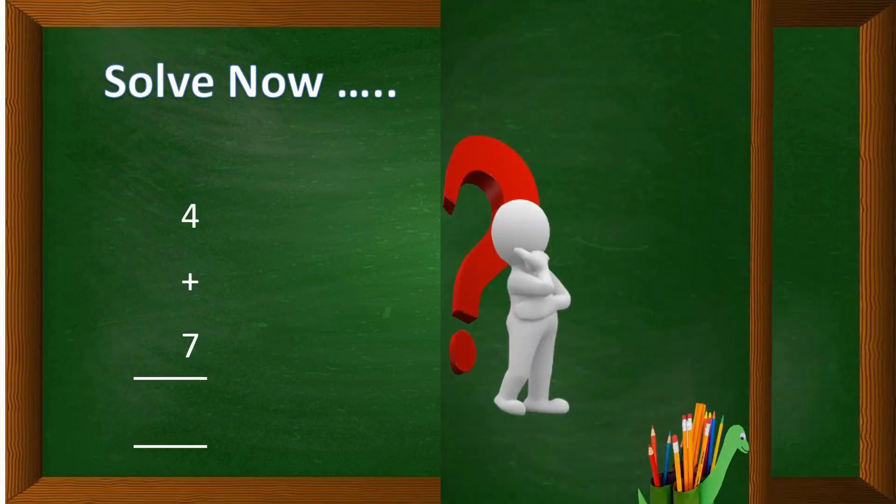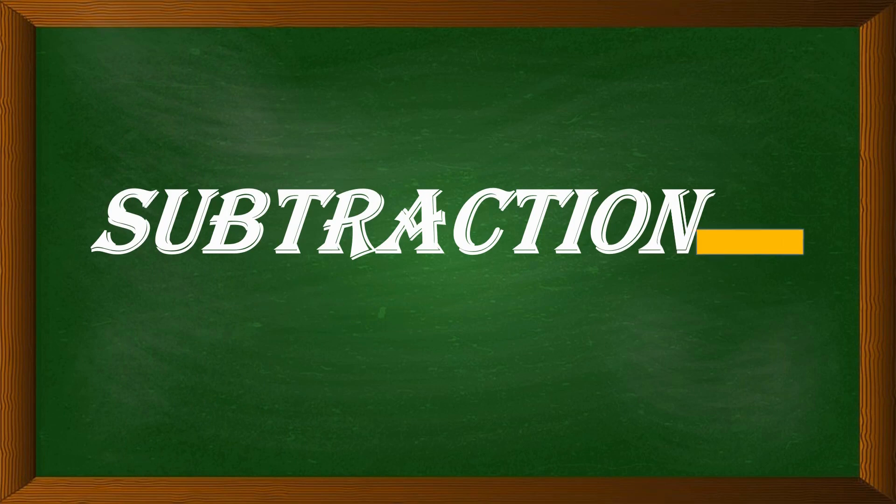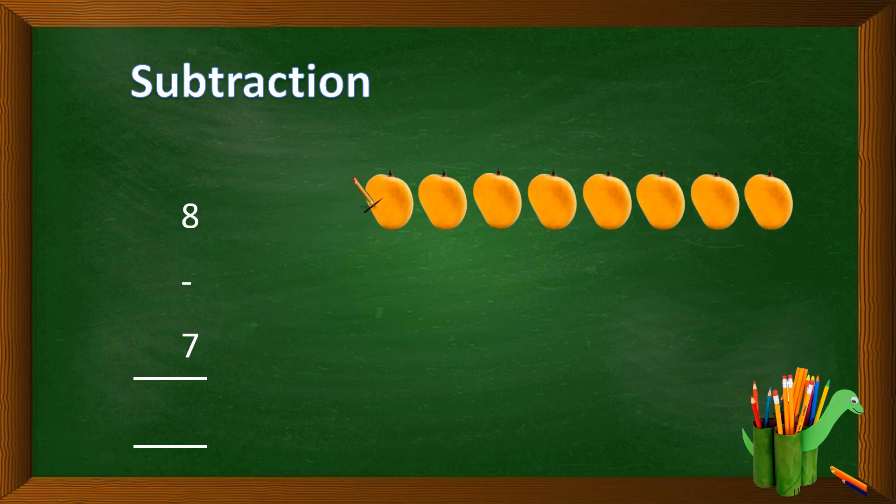Now we will do subtraction. Kids, we will subtract 8 minus 7. You have 8 mangoes: 1, 2, 3, 4, 5, 6, 7, 8. 7 mangoes are eaten by you: 1, 2, 3, 4, 5, 6, 7. How many left? 1 mango. So the subtraction of 8 minus 7 is 1.